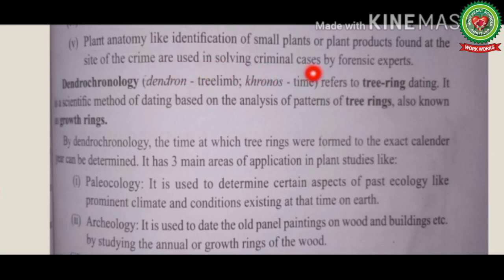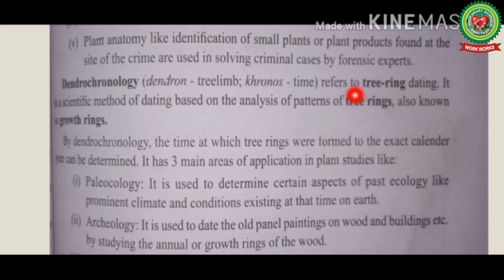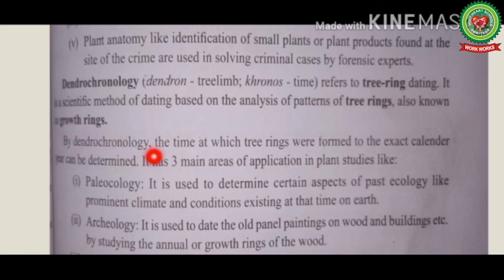Plant anatomy — such as identification of small plants or plant products found at the site of a crime — is also used in solving criminal cases for forensic experts. Dendrochronology refers to tree ring dating, by which we can find out the time at which tree rings were formed with exact calendar years. It is a scientific method of dating based on the analysis of patterns of tree rings, also known as growth rings.